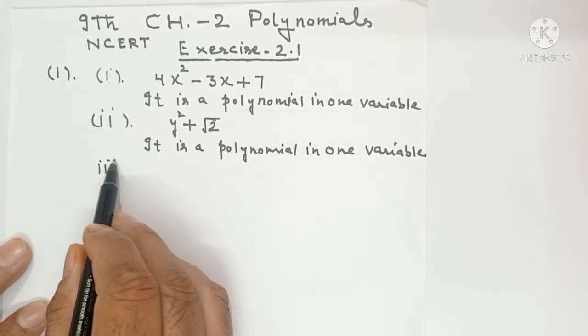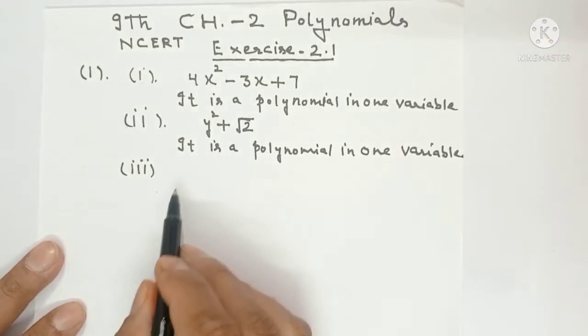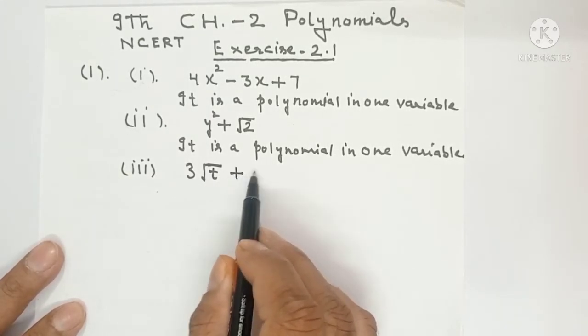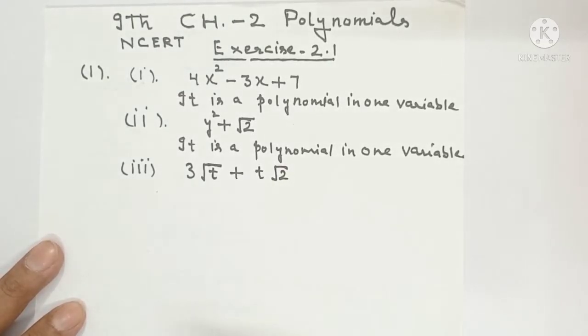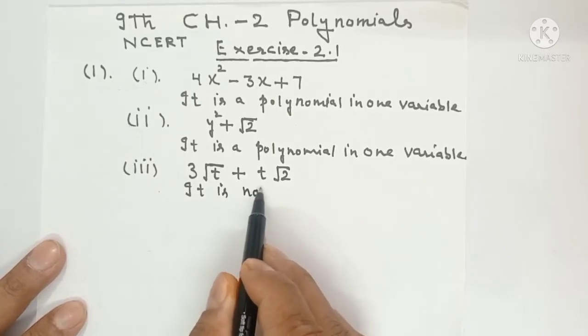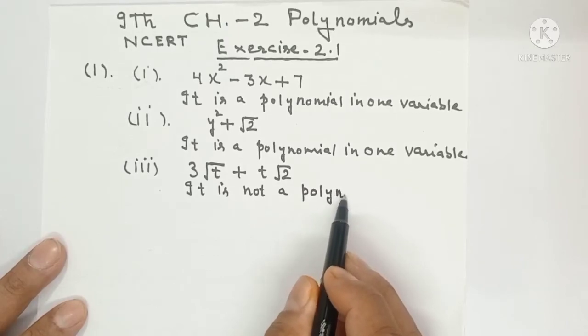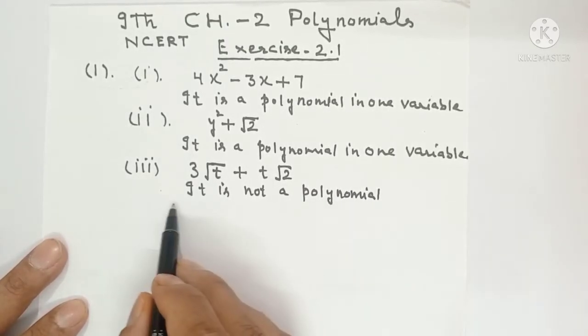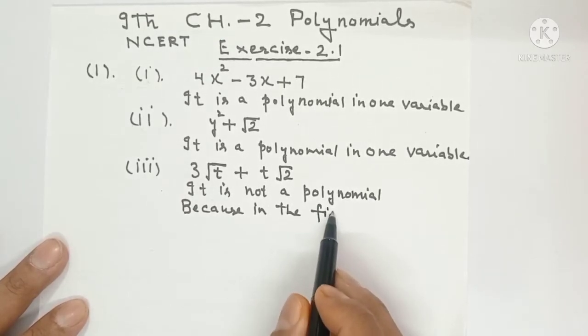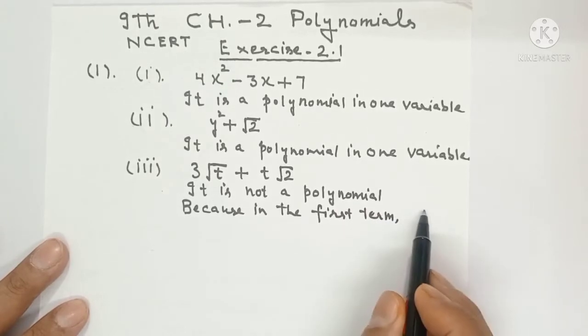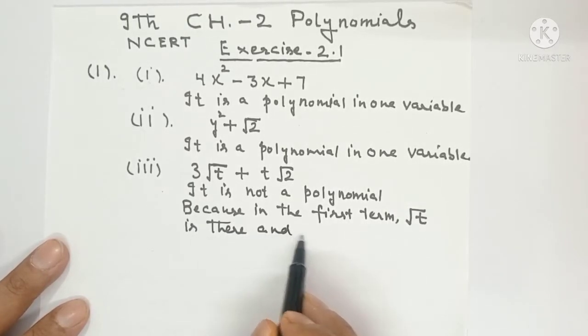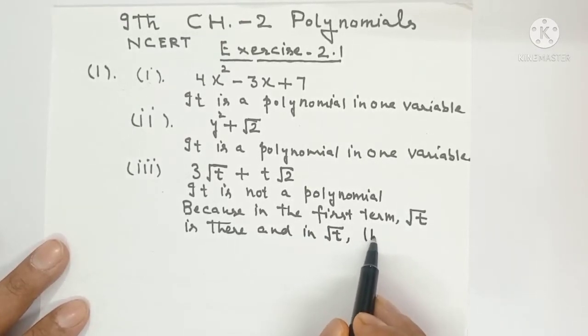Part number 3. 3 under root t plus t under root 2. So this polynomial is not, it is not a polynomial. This polynomial is not. Reason because in the first term, under root t is there and in under root t the exponent is, exponent is 1 by 2 because t under root is 1 by 2.